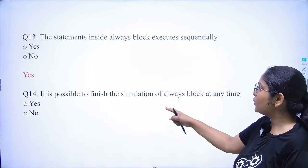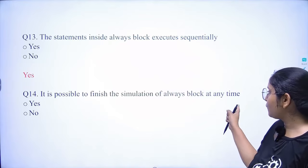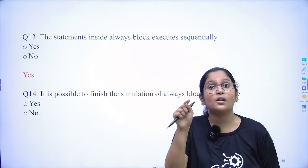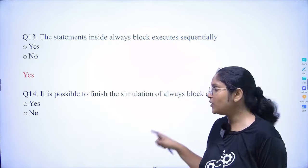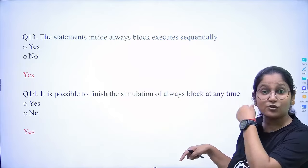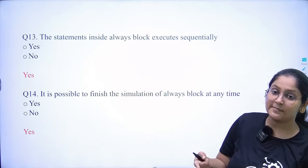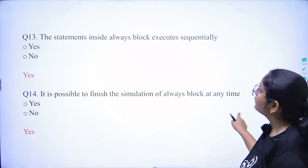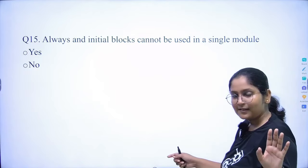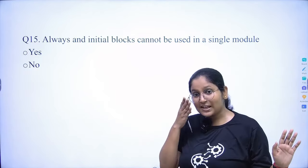Is it possible to declare and initialize a variable at the same time? Yes — for example, declaring reg clock and initializing it to zero inside an initial block simultaneously. We can use $finish to stop simulation of an always block at any time, or $stop to pause it.